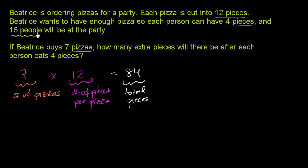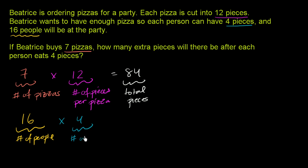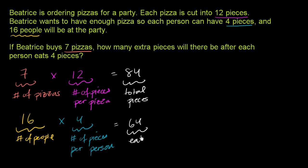Now let's think about how many get eaten by the 16 people. You have 16 people — that's the number of people, and this little symbol is shorthand for number. 16 people, and they each eat four pieces. So 16 people times four pieces per person — the number of pieces per person — 16 times four is 64. So 64 pieces are eaten by the 16 people.